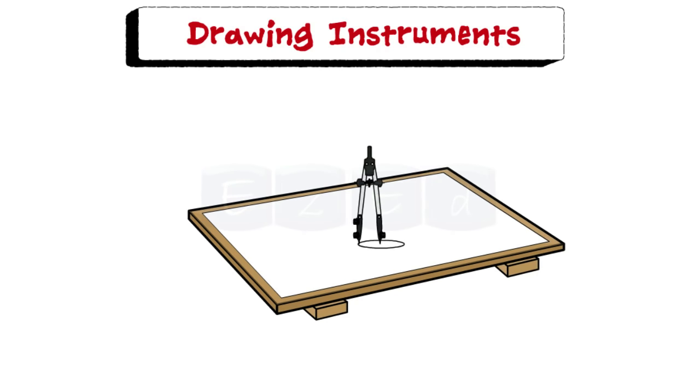A compass is used to draw a circle of a specific radius and an arc at a specific distance. Soft Indian rubber is widely used to erase pencil drawings. The eraser should be such that it does not spoil the surface of the paper.